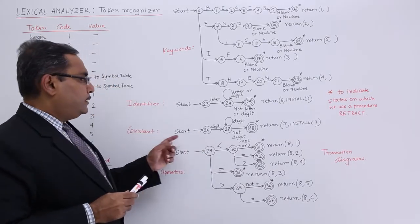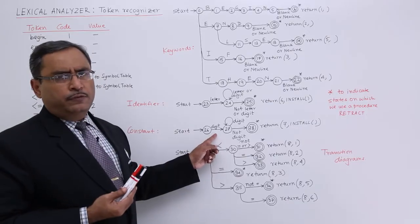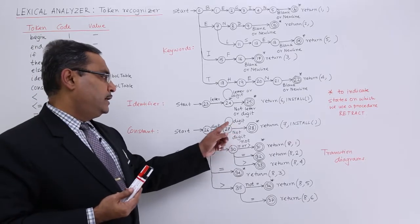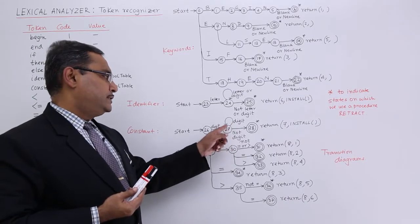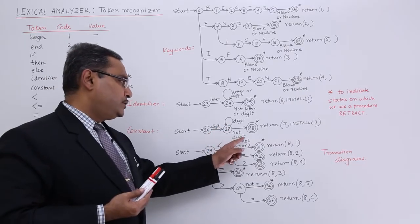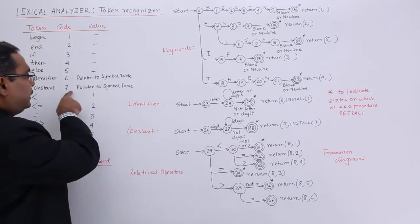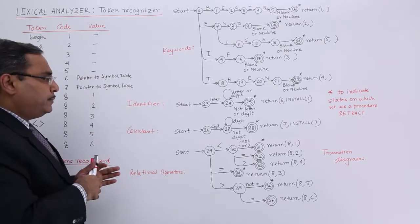Constant digit. Constant can be of single digit or multiple digits, so digit or digits, self loop, not digit, so go for return 7 install. Accordingly it is working according to this table.